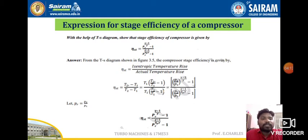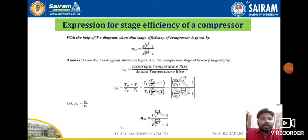This expression can be split and rewritten as: t1 times (t2-dash/t1 minus 1) divided by t1 times (t2/t1 minus 1). Now, t2-dash divided by t1 can be written in terms of pressure as (p2/p1) raised to the power of (gamma minus 1)/gamma, minus 1. In terms of pressure, this becomes (p2/p1) raised to the power of (gamma minus 1)/gamma, minus 1.